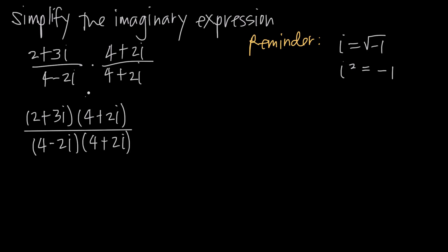When we do the multiplication, we're FOILing out these binomial terms. FOIL stands for first, outer, inner, last. Multiplying the first terms: 2 times 4 gives us 8. The outer terms: 2 times 2i gives us 4i. The inner terms: 3i times 4 gives us 12i. And the last terms: 3i times 2i gives us 6i squared.